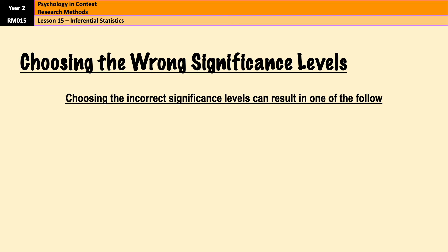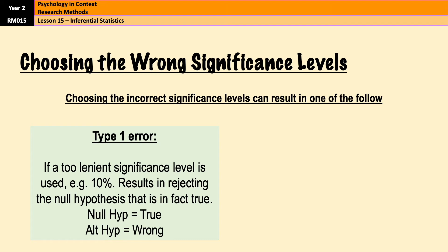Significance levels are quite important, and it is possible for researchers to choose the wrong significance level, which can have a negative impact on their research. Researchers have free range to choose whichever significance level they want, but if they choose the wrong one it can lead to one of two errors. If your significance level is too lenient — so if researchers go for a 10% significance level instead of 5% (0.1 instead of 0.05) — that could result in rejecting the null hypothesis when they shouldn't have. That's a false positive, called a type 1 error, which means we reject the null hypothesis when we should actually have accepted it.